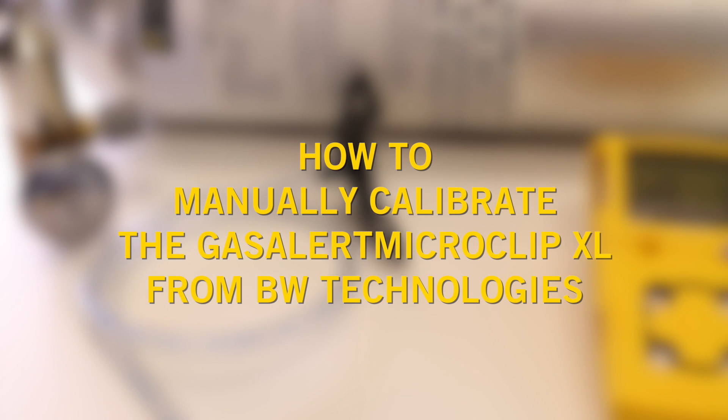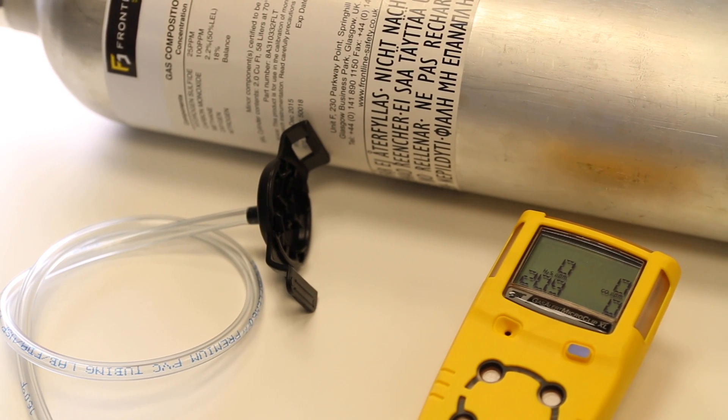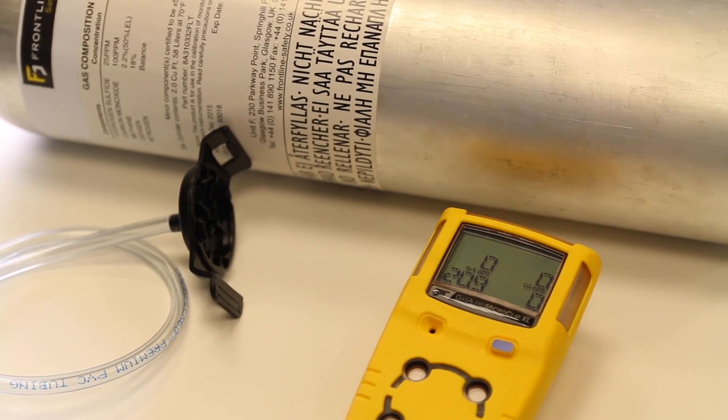In this guide we'll show you how to manually calibrate your BW Gas Alert MicroClip XL multi gas detector. To calibrate the unit you'll need the correct concentration of calibration gas.